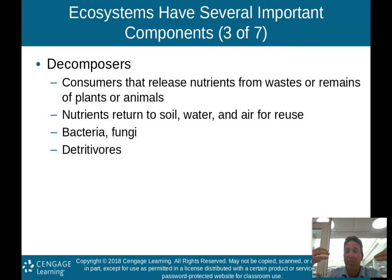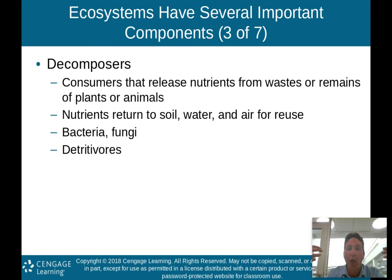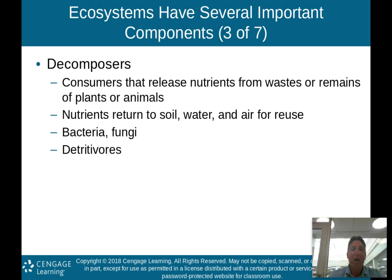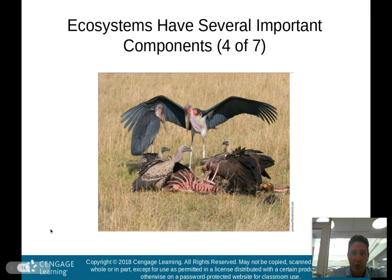Decomposers use some of those nutrients for themselves, but they also return nutrients to the soil, the water, and the air for reuse. Bacteria and fungi are examples of decomposers. Then we have something called detritivores, which are another type of decomposer.